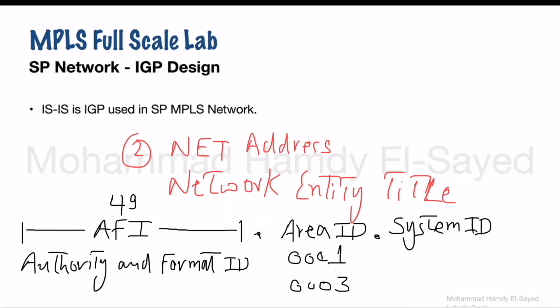The next part is the System ID. The System ID for each ISIS router must be unique and is commonly derived from the loopback address — typically Loopback 0 — which is configured with an IP address. This IP address is converted into a dotted decimal notation for the System ID. The final part of the NET address is the NSEL (N-Selector), which is like the process ID of the OSI stack, and is commonly set to 00.